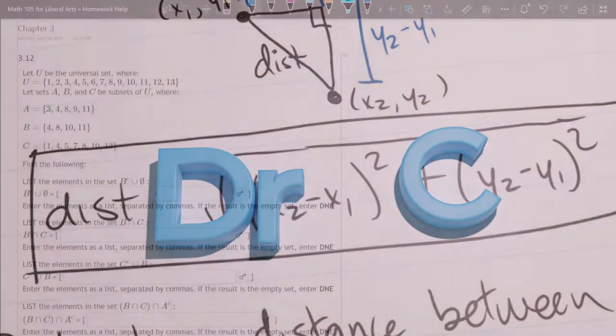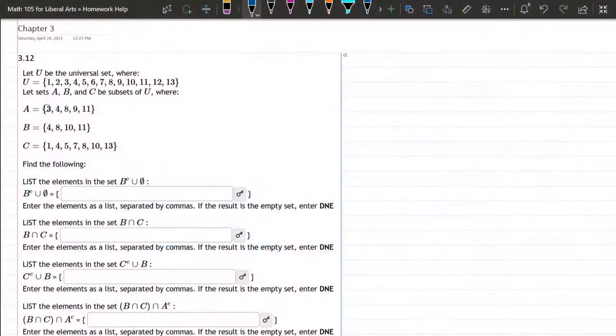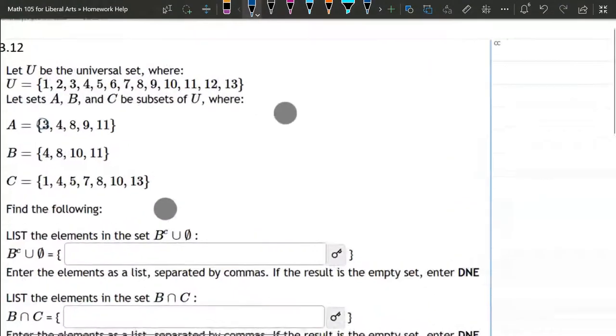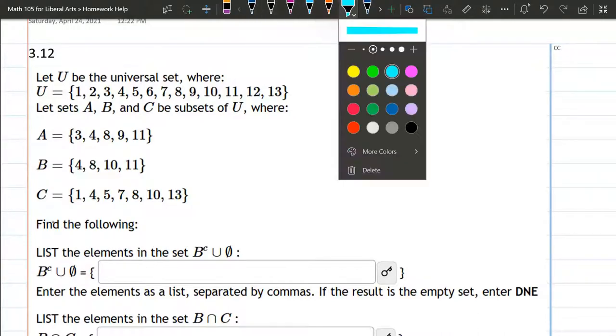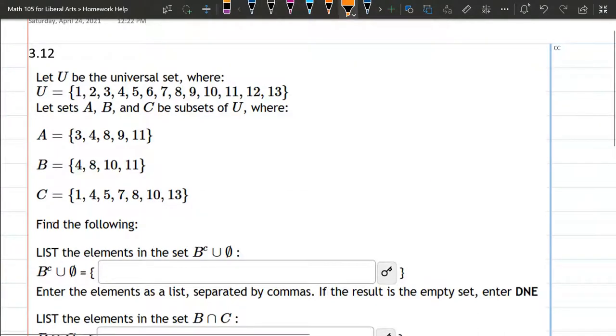In this problem we have a universal set and three sets A, B, and C. Before we get started on drawing these out, we're going to analyze these elements for a minute and see what's in common. First of all, the set U is the numbers 1 through 13 including 1 and 13.